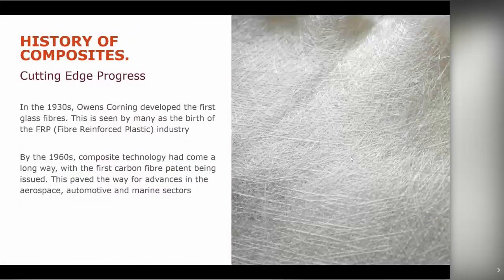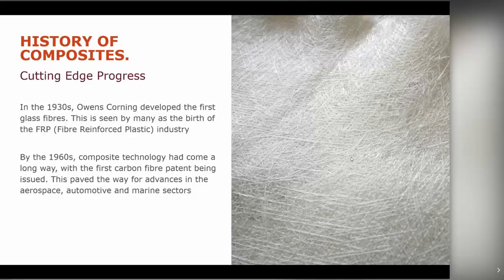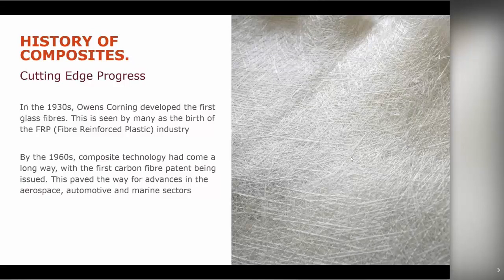The other component that made it possible to actually make composites into engineering materials as we know them today is the introduction of fibre. In the 1930s, Owens Corning developed the first glass fibres, which is seen as another turning point in the development of the fibre-reinforced plastics industry. By introducing thermosetting resins as a matrix material and commercially manufactured fibre, it became possible to start making composites in the way known to us today.